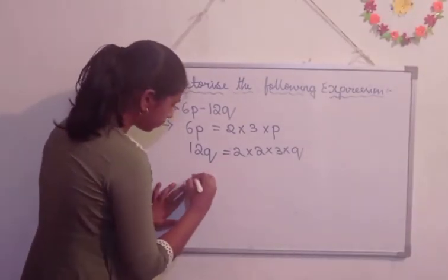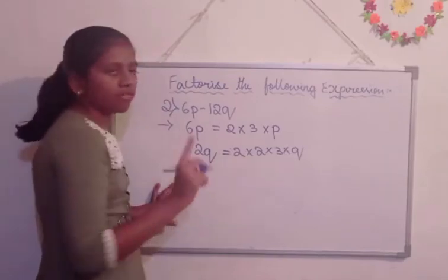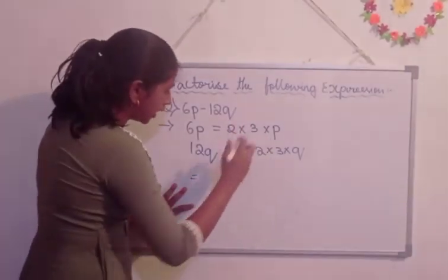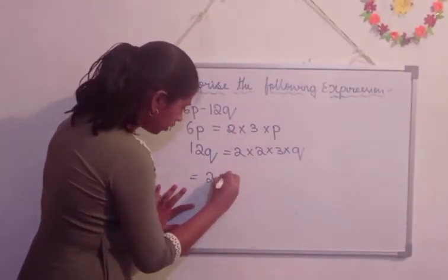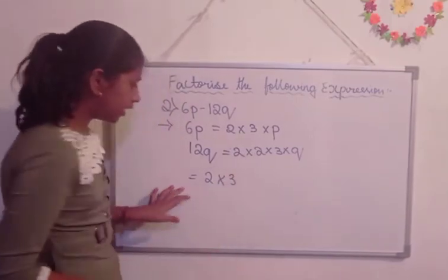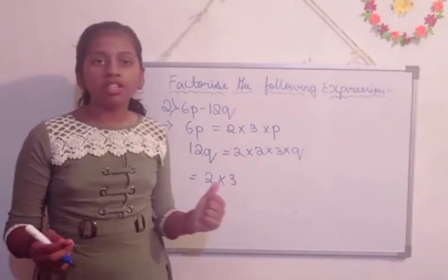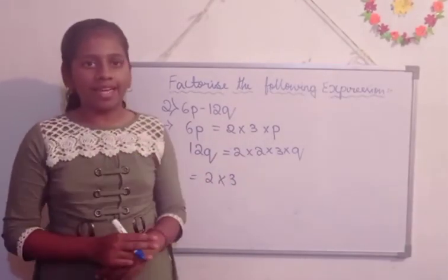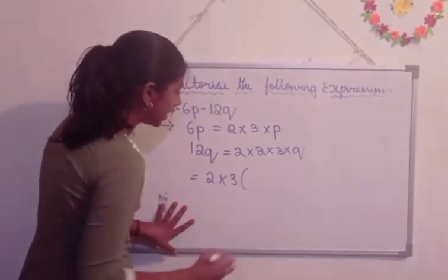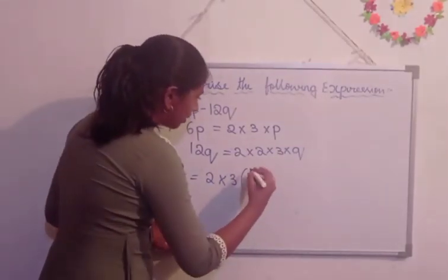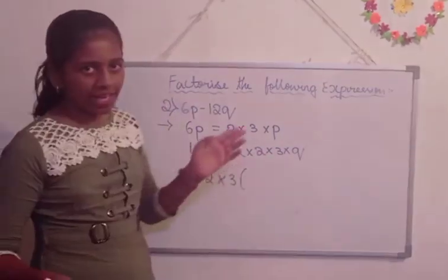So, it is equal to, we are going to write the common factors first. That is 2 into 3. The 2 into 3, the common factors should be outside the bracket. And then put the open bracket. Here we are going to write the left out factors.